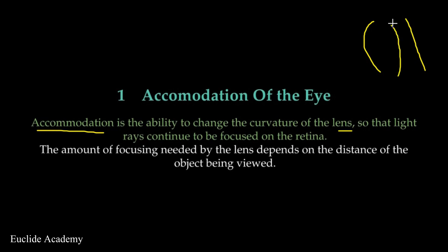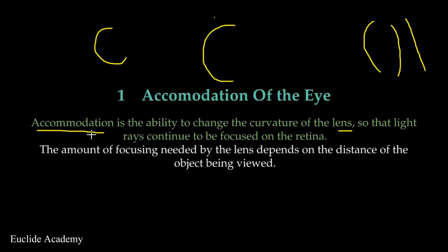Curvature talks about how something is caving. This line here is different from this one because this one caves more than the other, so we say this one has more curvature. The ability to change the shape is what we refer to as curvature. So accommodation is also the ability to change the curvature of the lens so that light rays continue to be focused on the retina.